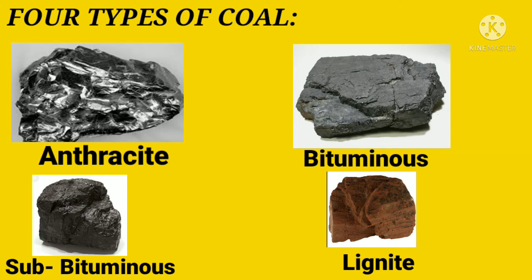Coming a little bit higher up, we have subbituminous coal, which is dull black in colour and releases more energy than lignite coal. Moving further to bituminous coal, it produces even more energy than subbituminous coal and is also known as soft coal. Finally, the last type is anthracite, which is the hardest kind of coal in the whole world and releases a large amount of heat when it burns. Unfortunately, there is very little anthracite left in the whole world.